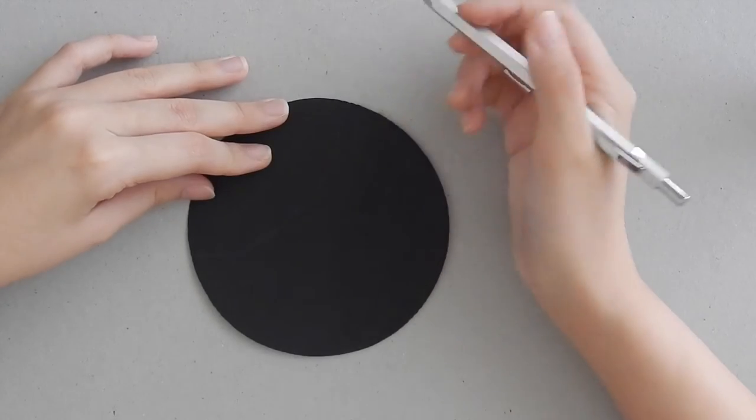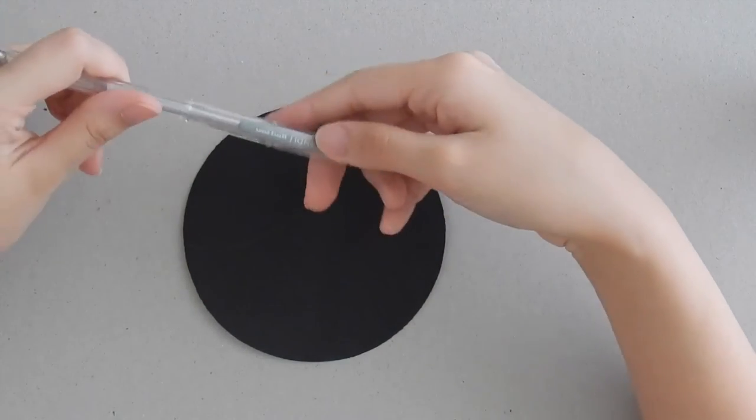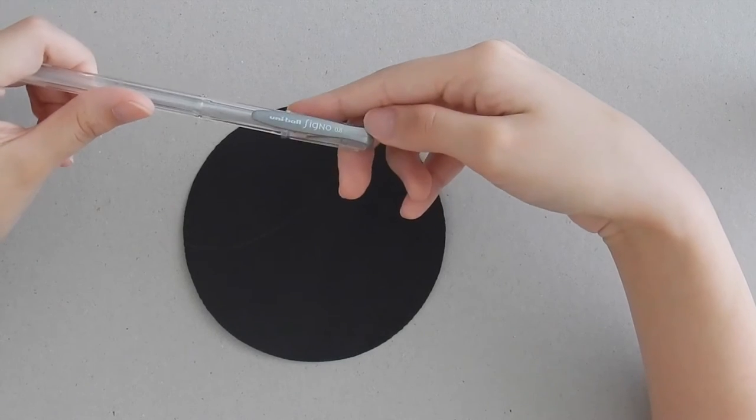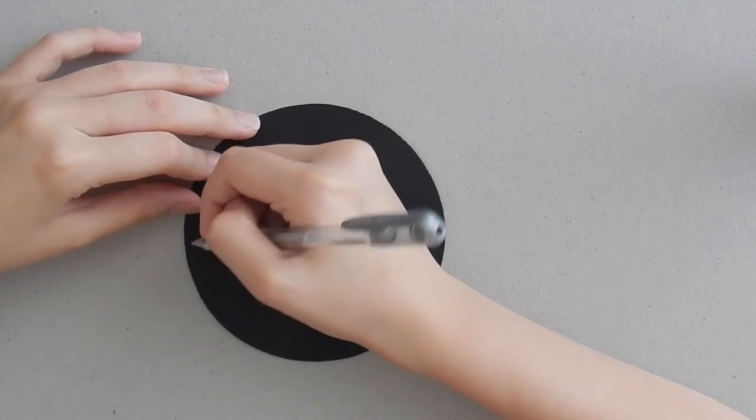We're going to start by drawing a string with our pencil, and then I'm switching over to a Uniball Signo in silver. You can, however, always use a white tile with a black pen. That's no biggie.